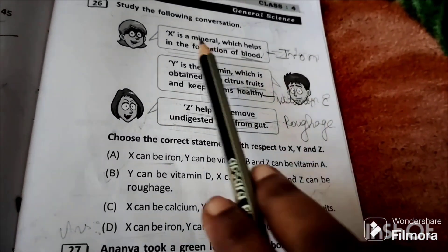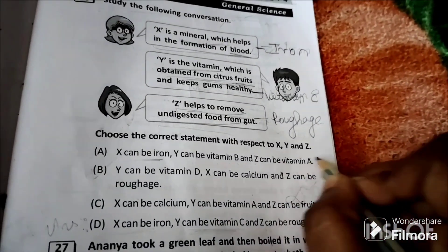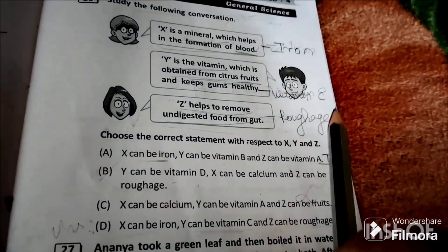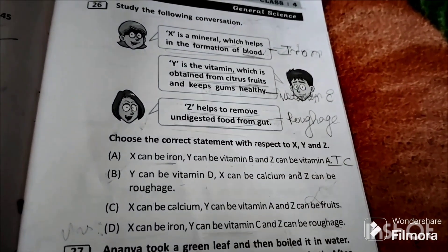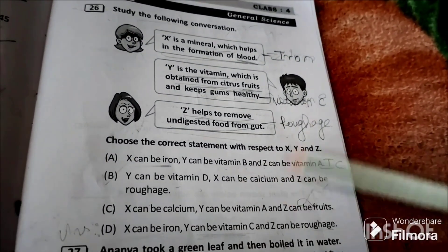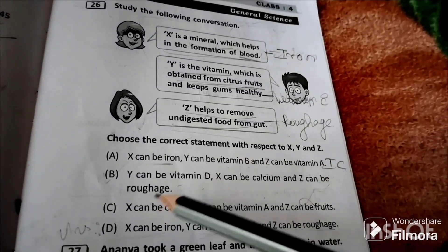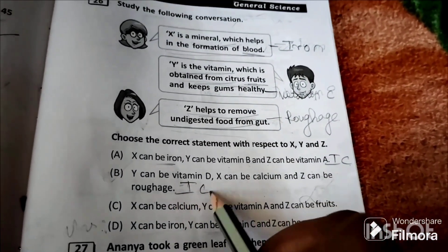Option B: Y can be vitamin D, no wrong, Y is vitamin C obtained from citrus fruits. X can be calcium is also wrong because X is iron. Z can be roughage only is correct, so this statement is also incorrect.